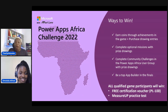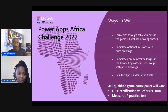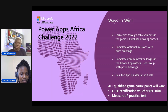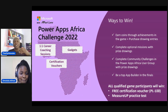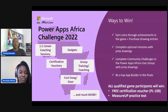I was happy because I was able to maximize my coins. When you compete, you'll be able to earn coins through achievements in the game. When you complete optional missions, you also get prize drawings. There are other things you can win by completing optional missions, all on the Centrica platform. When you go in to complete community challenges in the Power Apps Africa user group, you also get prize drawings. You have the opportunity of being a top app builder in the finals, one-on-one career coaching sessions, certification vouchers, gadgets, group training and coaching, cool swag, and much more. All qualified game participants will actually win a free certification voucher — PL-100 — as well as the practice test from MeasureUp.